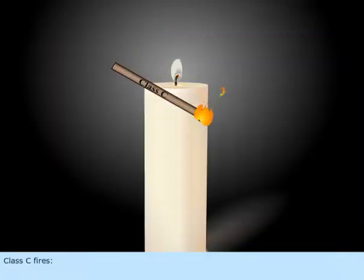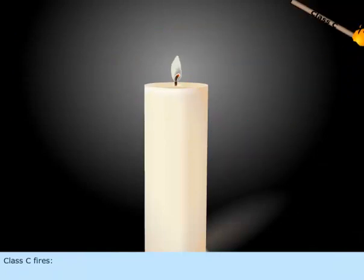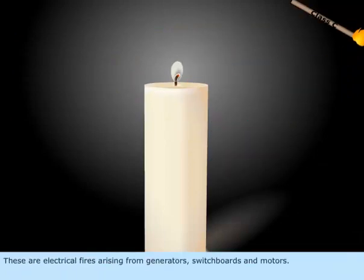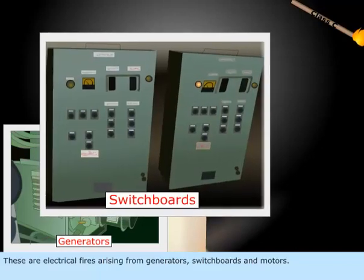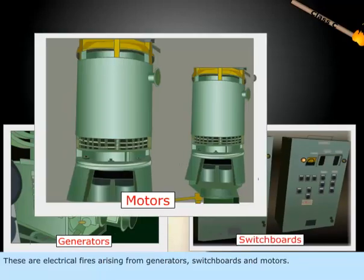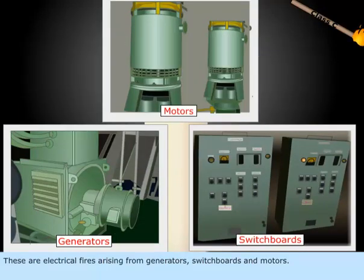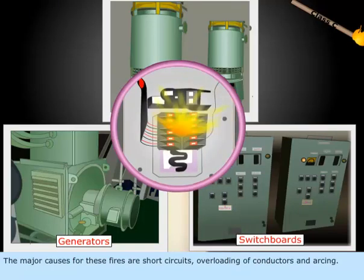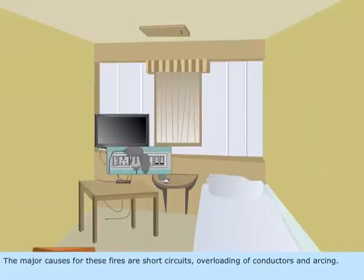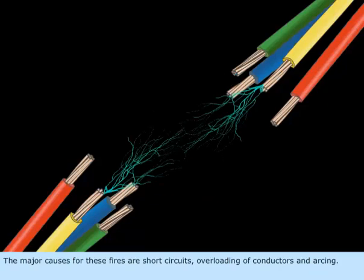Class C fires. These are electrical fires arising from generators, switchboards, and motors. The major causes for these fires are short circuits, overloading of conductors, and arcing.